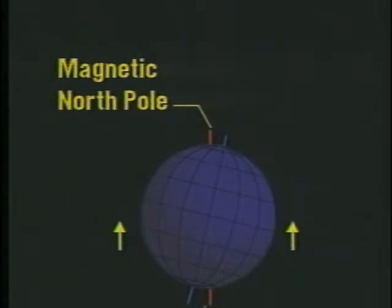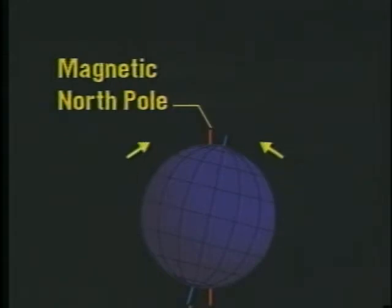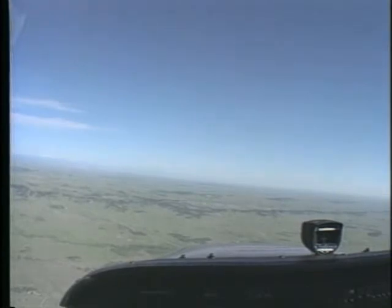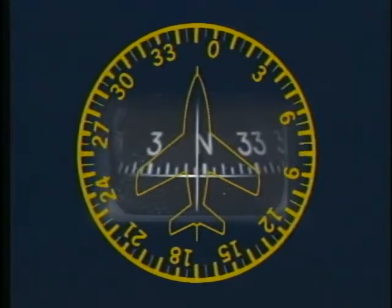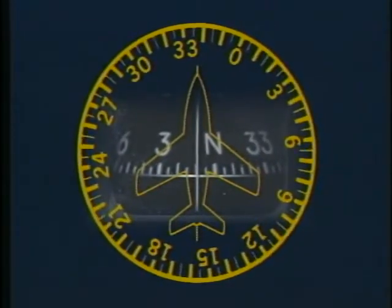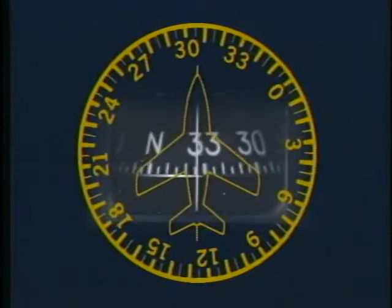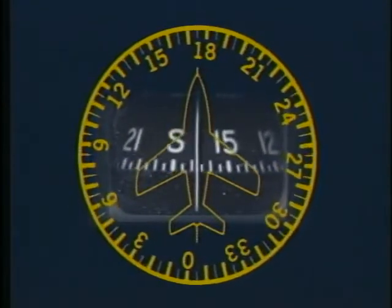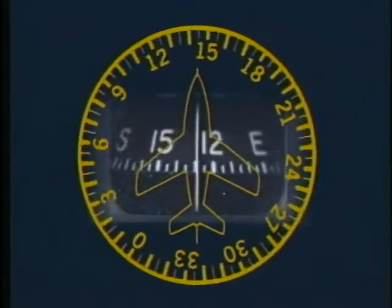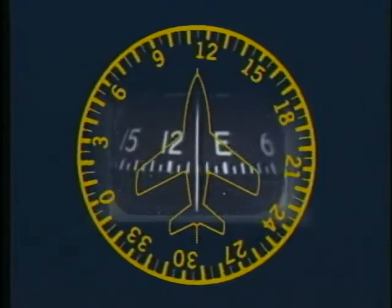The compass is also affected by magnetic dip, which is the tendency of a compass to point down and toward the magnetic poles. This error is greatest when you're near the poles. As a result of magnetic dip, your compass will give an incorrect reading when you turn, accelerate, or decelerate. In the northern hemisphere, a turn from a northerly heading results in the compass initially indicating a turn in the opposite direction, then lagging behind the actual heading. This lag decreases as you approach an easterly or westerly heading. In a turn from south, the compass will indicate the proper turn but will lead the actual heading. As in a turn from north, this error diminishes as the turn approaches east or west.